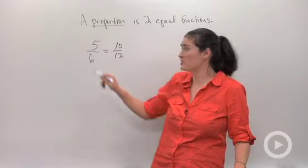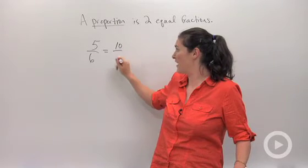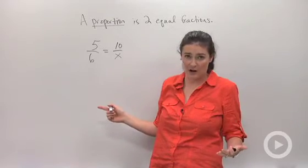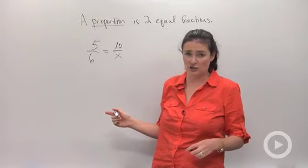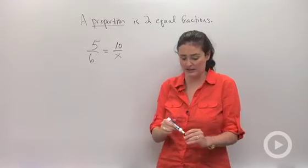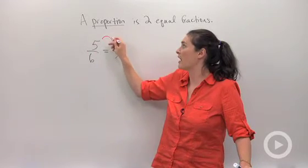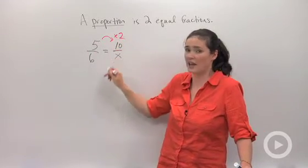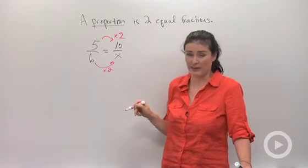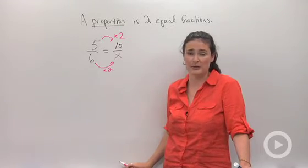Sometimes with proportions, you see two equal ratios written like this. A lot of times you're going to have a variable where instead of telling you that was 12, they would ask you to find out what it is. So when you're given a problem like this, there are a couple different ways to solve. The first way is to think about how 5 times 2 gave you 10, so 6 times 2 would give you 12 — look for what number you're multiplying by.